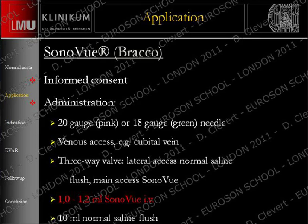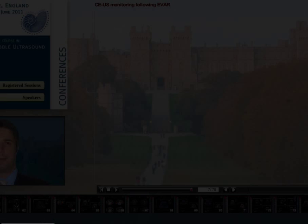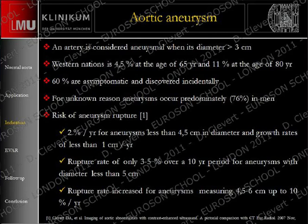If we speak about aortic aneurysm, we know that an aortic aneurysm is defined as a diameter of more than 3 cm. In western nations we have a higher risk to develop an aortic aneurysm, and more than 60% of these aneurysms are asymptomatic. If the patient has pain, it may indicate the aneurysm is rupturing. There is a known correlation between diameter and risk of rupture — a bigger diameter means higher risk.